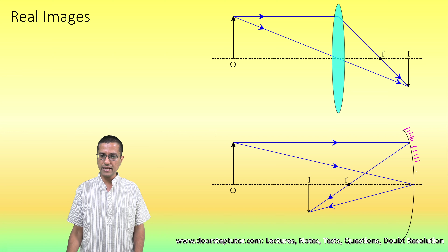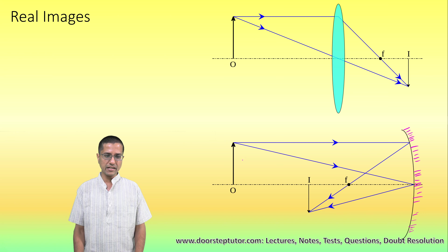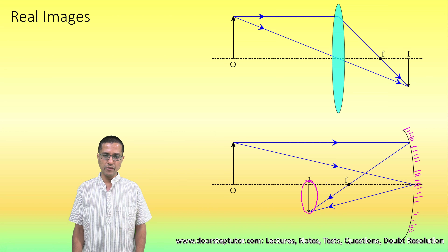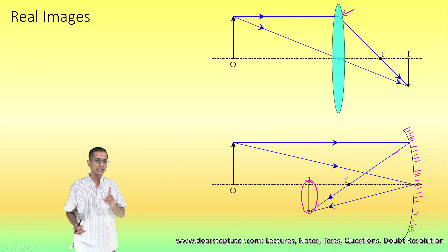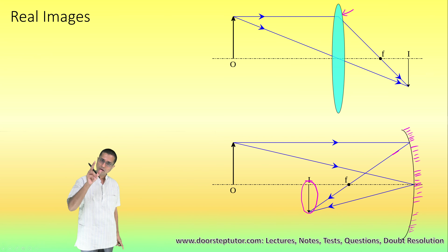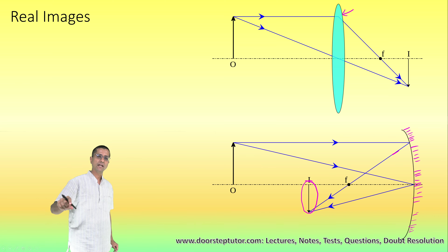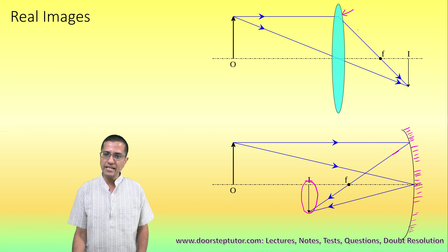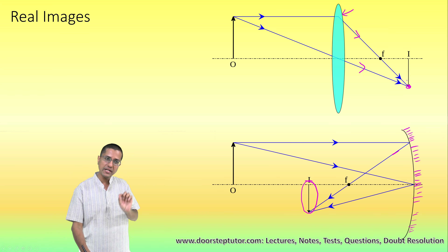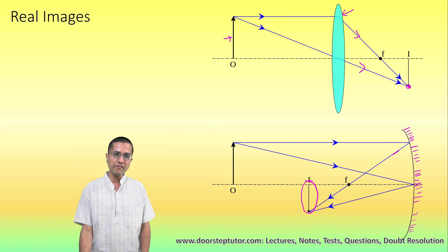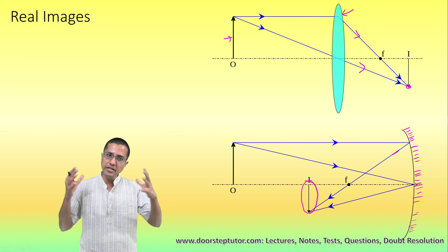Here is our concave mirror — this is the mirror, and the light rays are coming from the object, getting reflected according to the laws of reflection, and I get the image here. In the case of both the convex lens and the concave mirror, the light rays naturally converge, which means they naturally meet at a point.